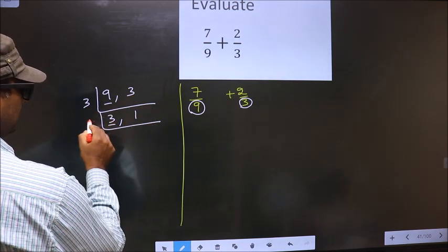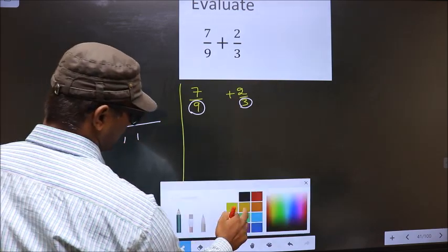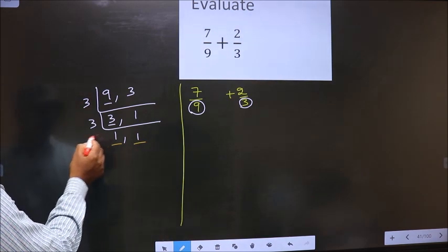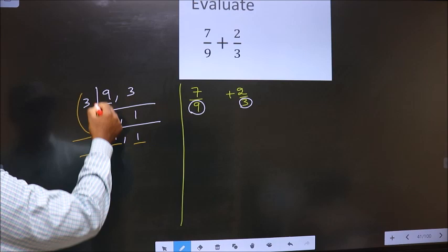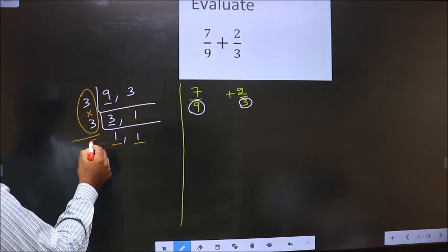Now here we have 3. 3 is a prime number so 3 once 3. We got 1 in both the places. So our LCM is the product of these numbers, that is 3 into 3, which is 9.